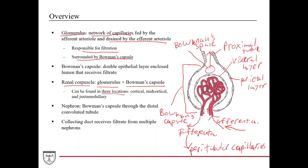Renal corpuscles can be found in three locations: the cortical area, the mid-cortical area, and the juxtamedullary area, which is at the border of the cortex and medulla. The nephron begins by definition at Bowman's capsule and goes through the distal convoluted tubule. From there you go into the collecting duct, which receives filtrate from multiple different nephrons and is responsible for concentrating or diluting the urine, then into the minor calyx, major calyx, renal pelvis, and ureter.